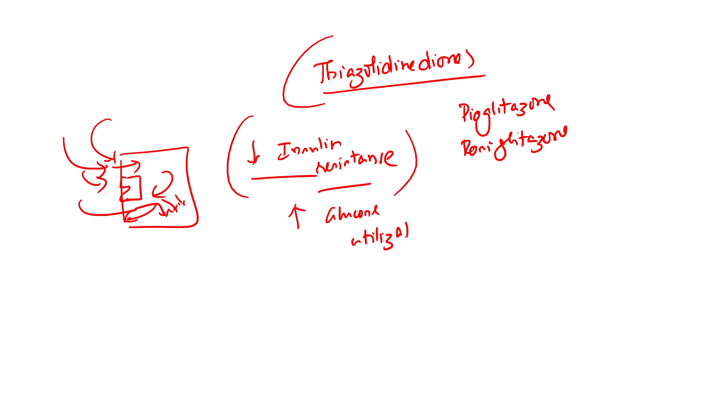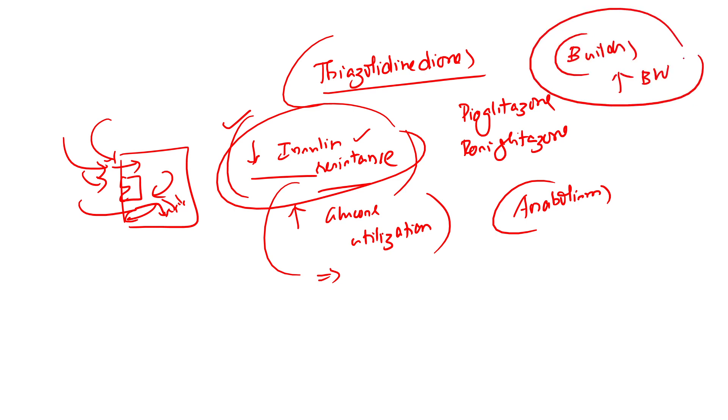Now you all know the primary function of insulin is to uptake glucose. The secondary function is activating glycolysis. The tertiary quaternary function can be anabolism. Because the body is suddenly learning how to respond to insulin, now the insulin's activity is anabolism. It builds your body. Because of which it can increase your body weight, and that is the side effect you should be worried about.